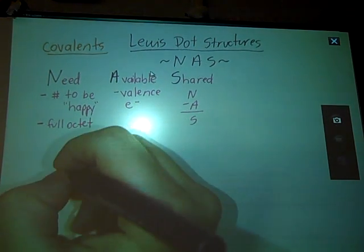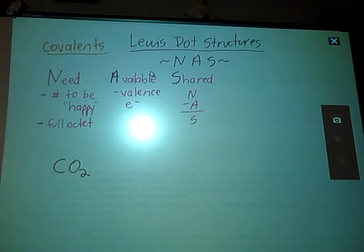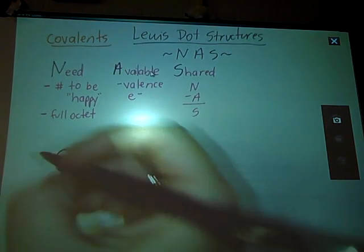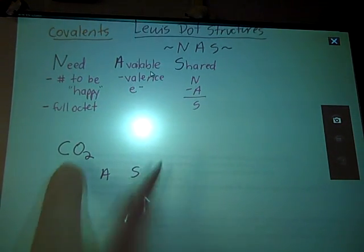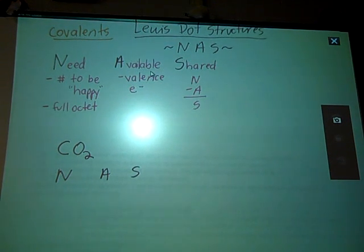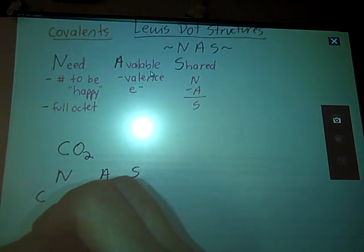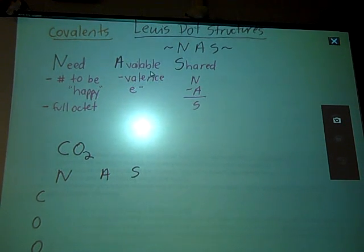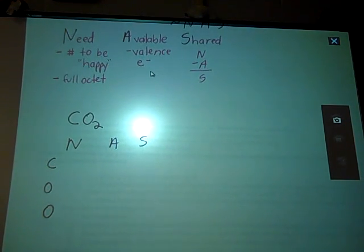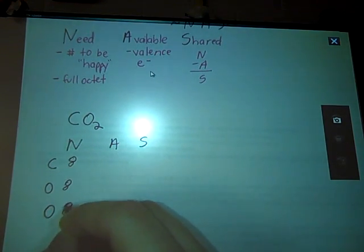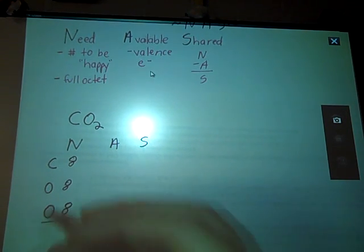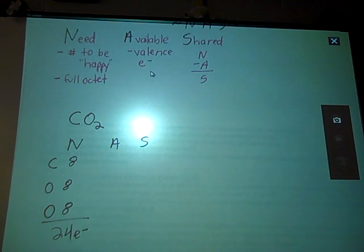Let's try CO2, carbon dioxide. So: Need, Available, Shared. Carbon needs eight valence electrons, and so does each oxygen. Summing those together, 8 times 3 is 24 electrons that I need to make all of these atoms happy.